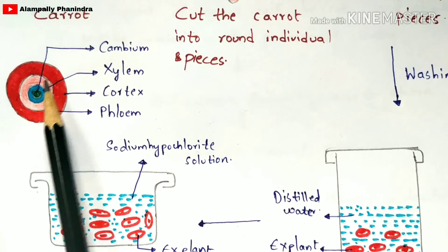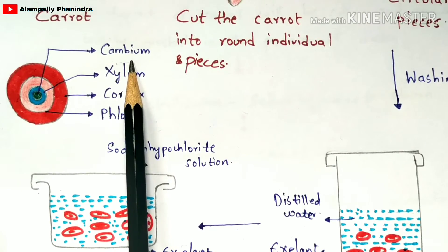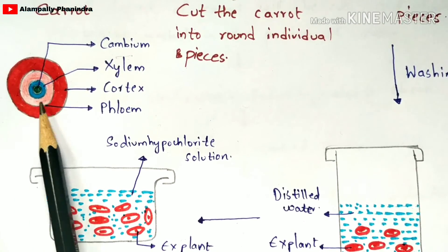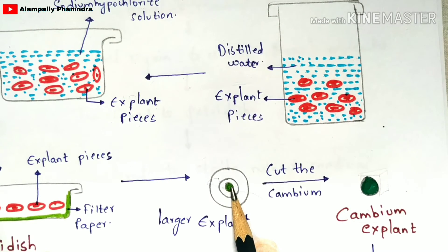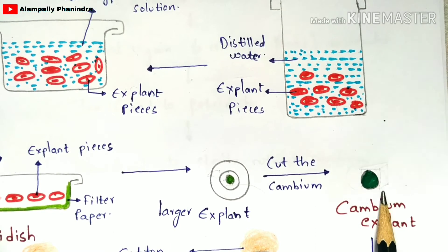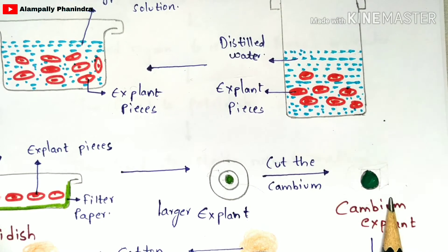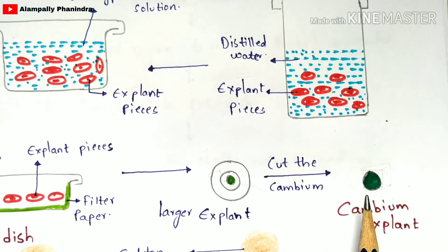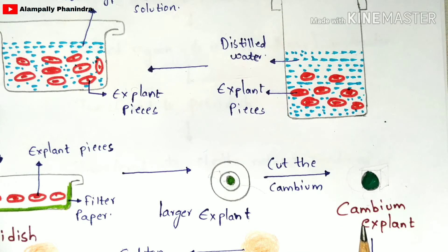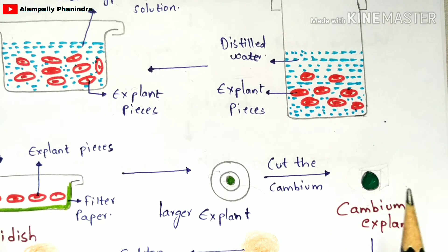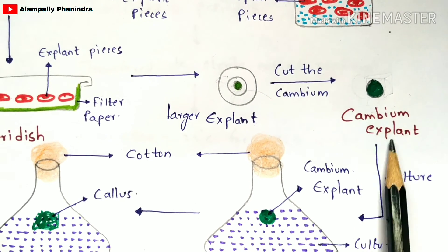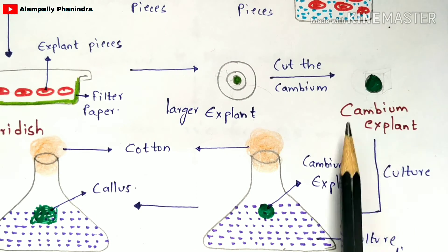The cambium must be extracted or isolated from the larger explant. From the larger explant — the whole circular carrot piece — you cut out the middle cambium region. This isolated middle portion is called the cambium explant, or smaller explant. The cambium explant plays a major and vital role in callus culture.